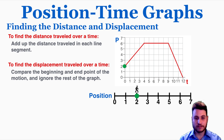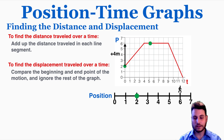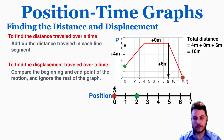This next section is about how to find the distance and displacement on a position time graph. To find the distance, add up all the individual distances the object travels along its path. To find the displacement, compare the beginning and final positions. For this object, they go up 4 meters, stand still, then go down 6 meters. Total distance is 4 plus 0 plus 6 equals 10 meters. The displacement is just negative 2 meters, since they ended at 0 and started at 2.